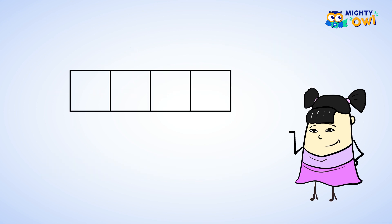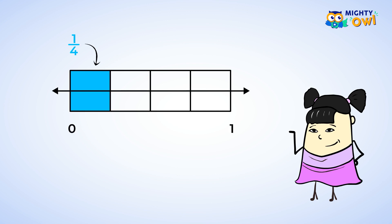Here we have a rectangle, and it's been divided up into 4 equal parts, and one part is shaded. So the shaded fraction is 1 fourth. If we were to put this rectangle over a number line, we could see how the 4 equal parts of the rectangle are also 4 equal parts of a number line.